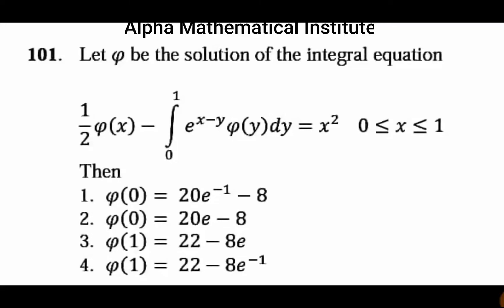Hi friends, welcome to Alpha Mathematical Institute of Chennai. Now we will discuss a problem on integral equations. Let φ be the solution of the integral equation: (1/2)φ(x) minus the integral from 0 to 1 of e^(x−y) · φ(y) dy equals x², where x lies between 0 and 1. We need to calculate φ(0) and φ(1).